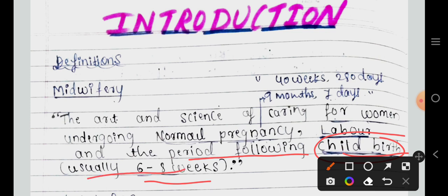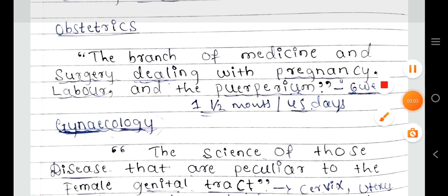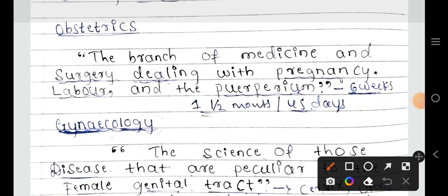The next definition is obstetrics. Obstetrics is the branch of medicine and surgery dealing with pregnancy, labor, and the puerperium period. It involves the same care — pregnancy and the mother — but the key difference between midwifery and obstetrics is that obstetrics involves surgery. Midwifery deals with normal labor, whereas obstetrics deals with abnormal labor, handled through surgery.